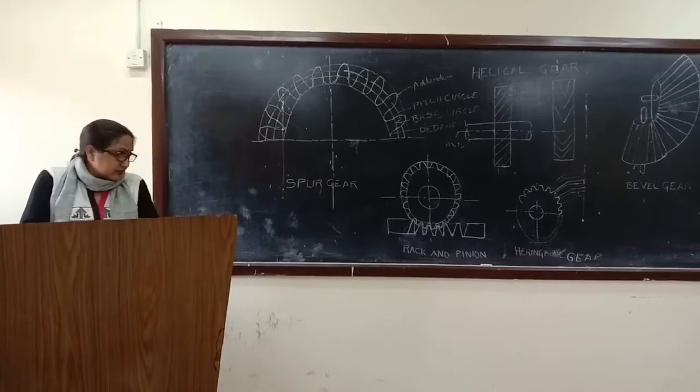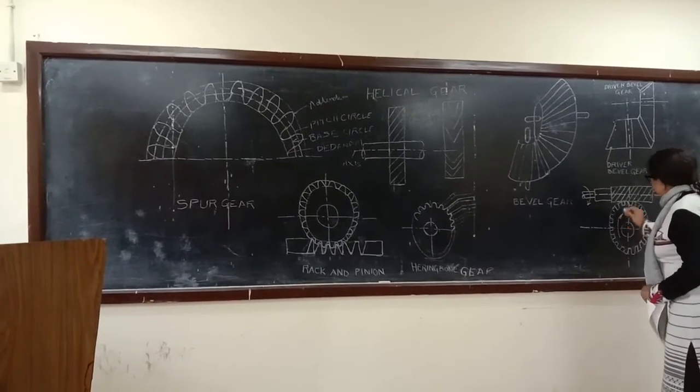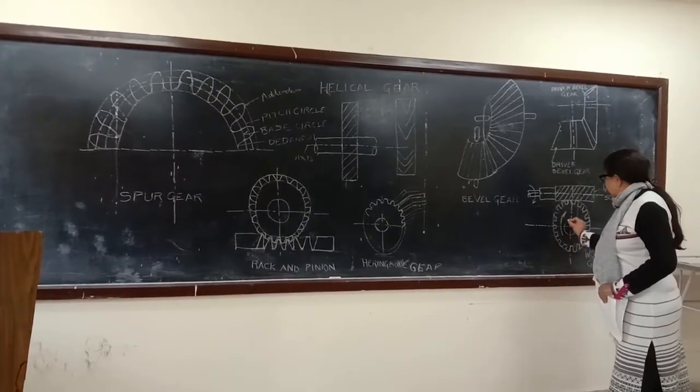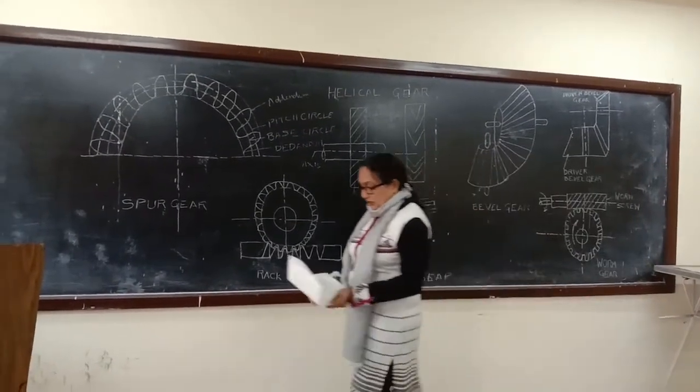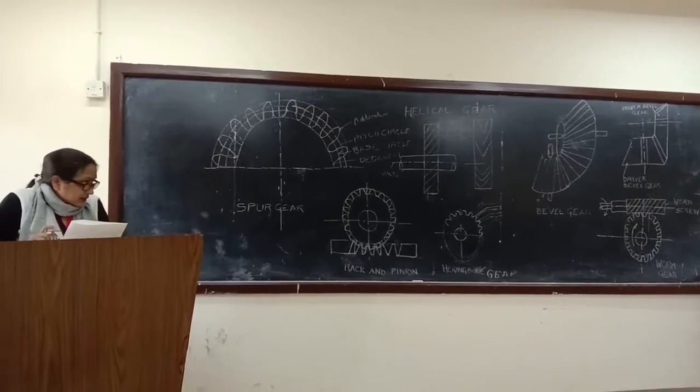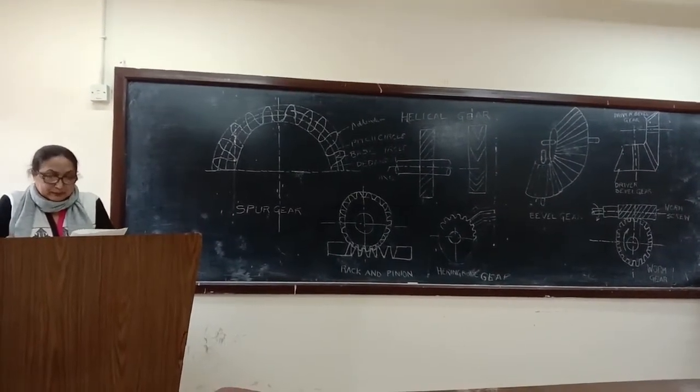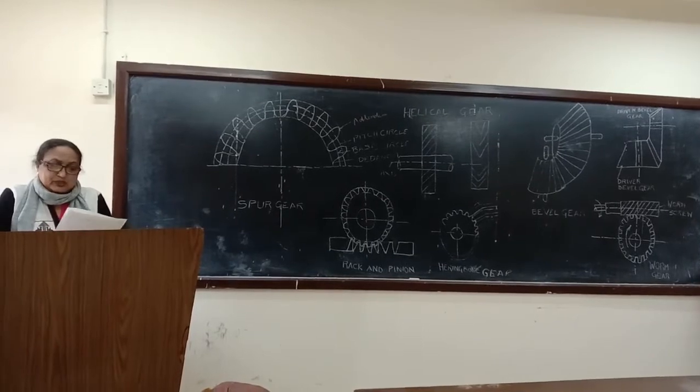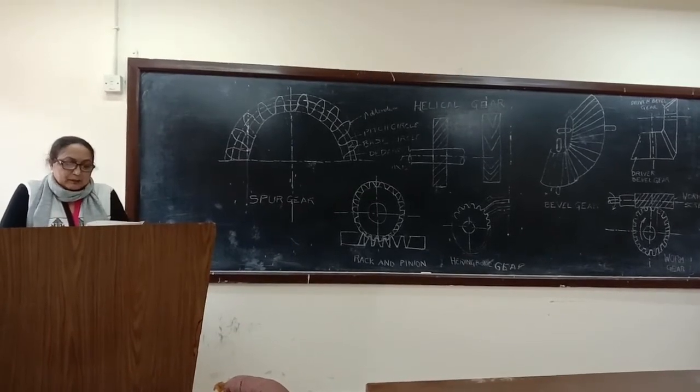Next is worm gear. Worm gear is different - it consists of a screw-like worm meshing with a worm wheel. The shafts are not intersecting and are generally at right angles to each other. Worm gears have very high reduction ratio.